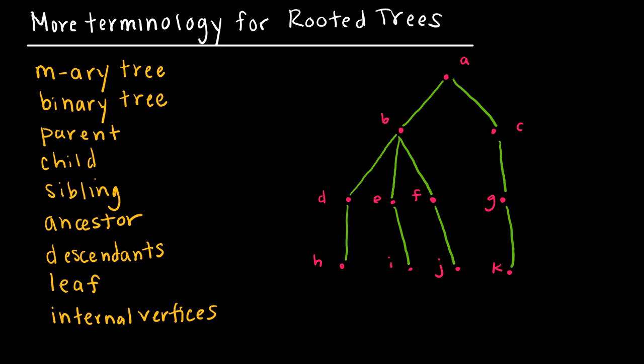Let's look at more terminology for rooted trees. We're looking at a rooted tree — it's a directed graph, though I didn't show the direction. I'll start with parent, child, sibling, ancestor, and descendants. These are all terms you probably know in the English language and they're pretty straightforward.